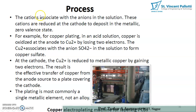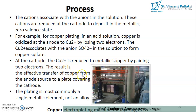The cations associated with the anions in the solution are reduced at the cathode to deposit in the metallic zero valence state. For example, in copper plating in an acid solution, copper is oxidized at the anode to Cu²⁺ by losing two electrons. The Cu²⁺ associates with the anion SO₄²⁻ in the solution to form copper sulfate. At the cathode, Cu²⁺ is reduced to metallic copper by gaining two electrons, resulting in the transfer of copper from the anode to a coating covering the cathode. The plating is most commonly a single metallic element, not an alloy.